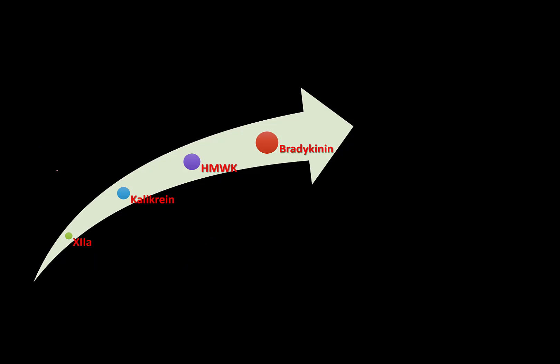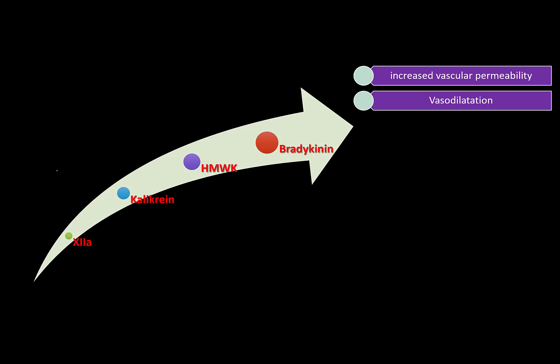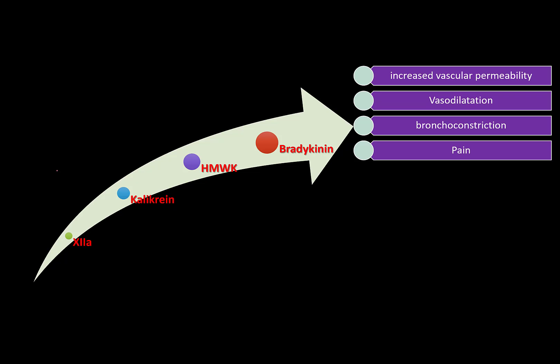Now, what does bradykinin do? Bradykinin receptors are present throughout the body. When it acts on blood vessels, it increases permeability and causes vasodilatation, whereas it causes bronchoconstriction in the bronchus, and it causes pain and chemotaxis.